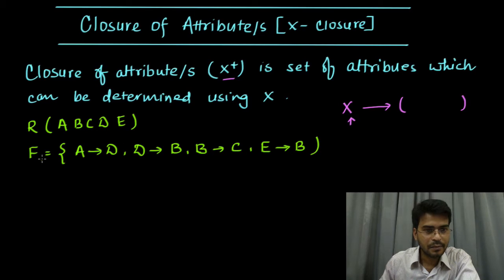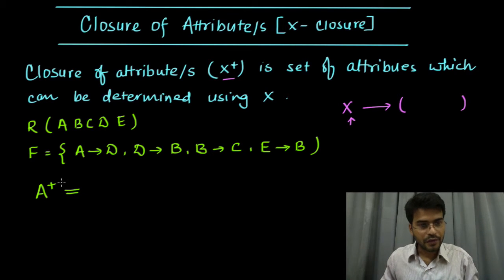Let us understand this with an example. Here we have a relation which has attributes A, B, C, D, and E, and we have a few functional dependencies given. Now let us try to find out what is closure of attribute A, which we will be representing as A plus.